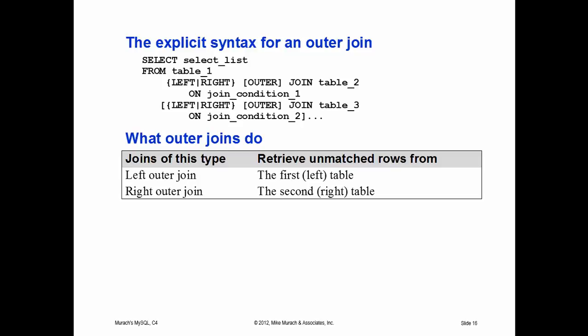Everything we've looked at thus far has related to what is referred to as an inner join — things that exist in both tables. You can also do an outer join. If you do a left outer join between two tables, the one mentioned first returns everything even if there aren't matches in the one on the right. If you do a right outer join, it returns everything from the second table even if there are no matches in the first table.